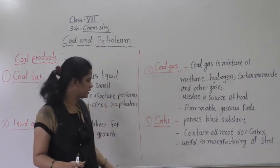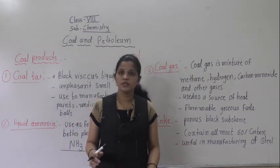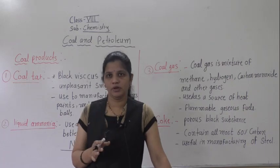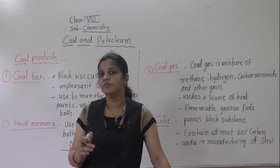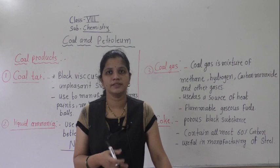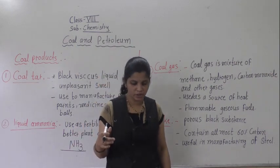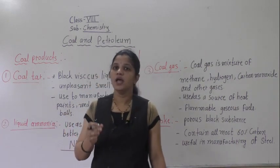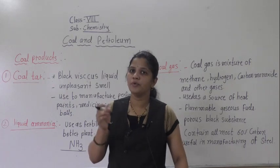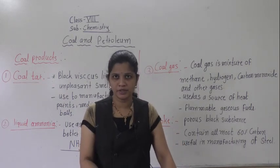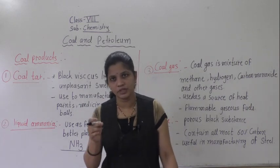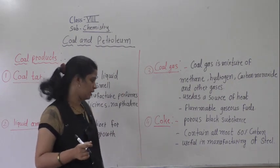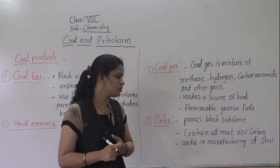Now our last product is coke. Coke is a residue of coal — after the burning when we provided heat, as discussed in destructive distillation, coke remains as the residue of coal. It contains more than 50% carbon — in fact it is the purest form of carbon, containing almost 60% carbon — and it is useful in the manufacturing of steel.